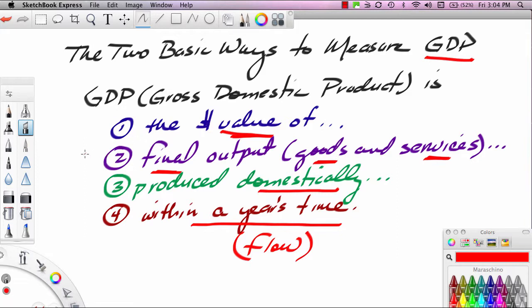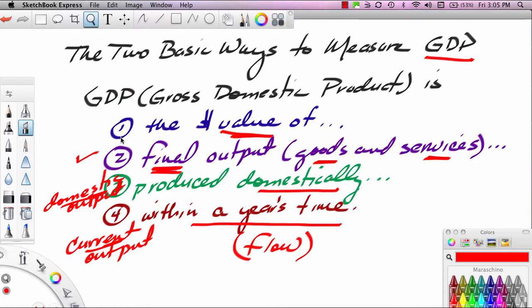So we can say that, let's just summarize. GDP is a measure of final output. GDP is a measure of, I'm just going to put this word in here, domestic output. And GDP is a measure of current, current output. And these are the three operative words: final, domestic, and current. Okay, now, let's move on and discuss how GDP is actually measured.